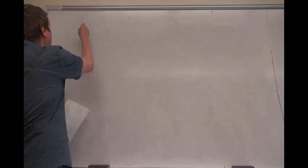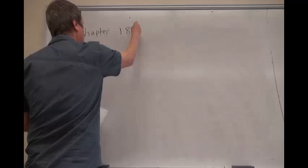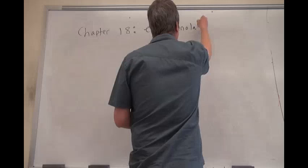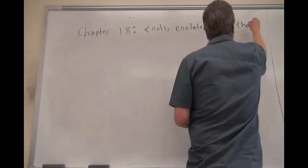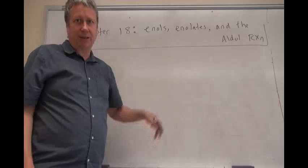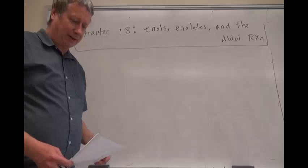We finished Chapter 17, so now let's talk about Chapter 18. Chapter 18 is about enols, enolates, and the aldol reaction. You already learned about enols a little bit when we talked about alkynes — keto-enol tautomerism — and we'll talk more about that shortly.